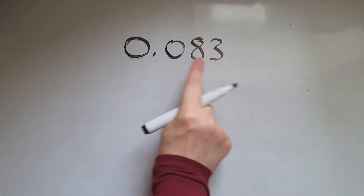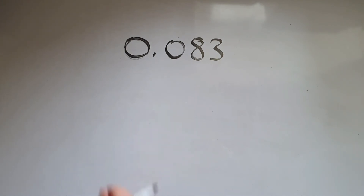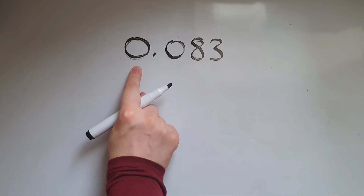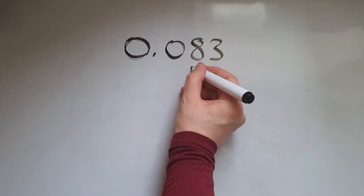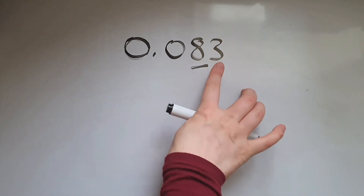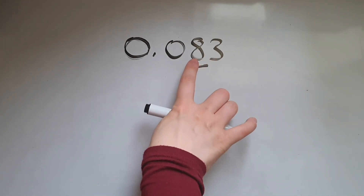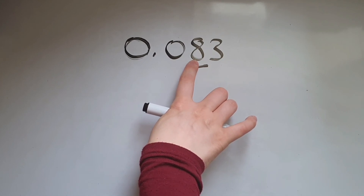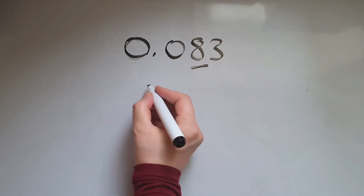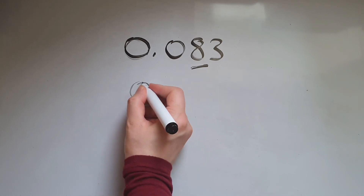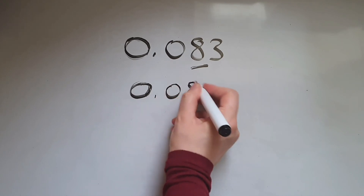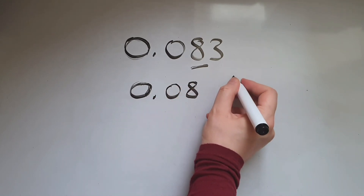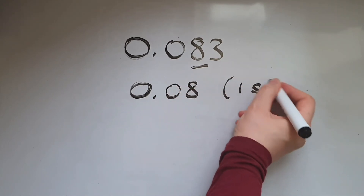So if we have 0.083 and we need to round to one significant figure — although the first digit is 0, the first significant figure is 8. So we look at the 3 to determine whether we round up or down, and of course we round down because 3 is lower than 5. So we get 0.08 to one significant figure.